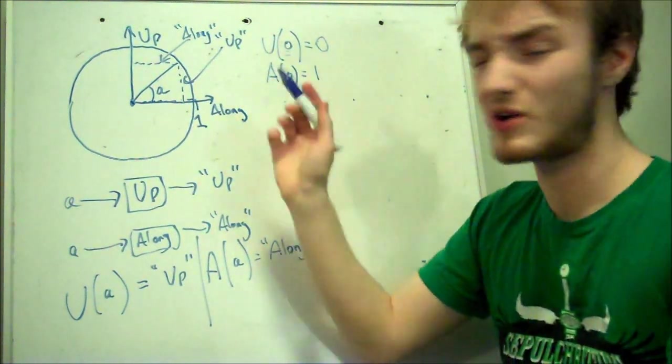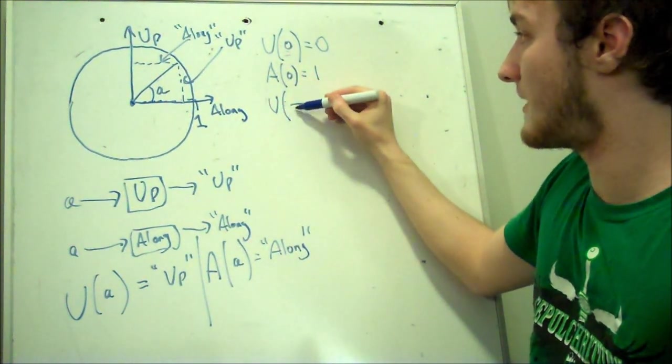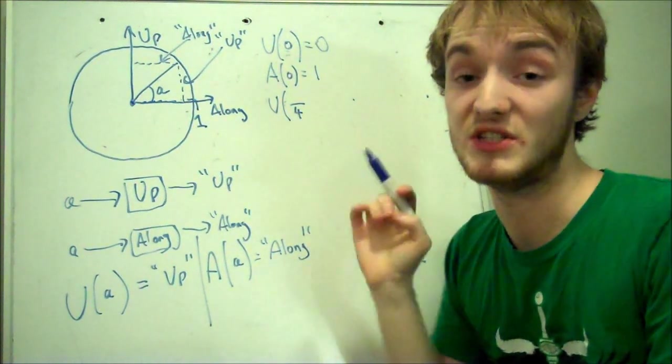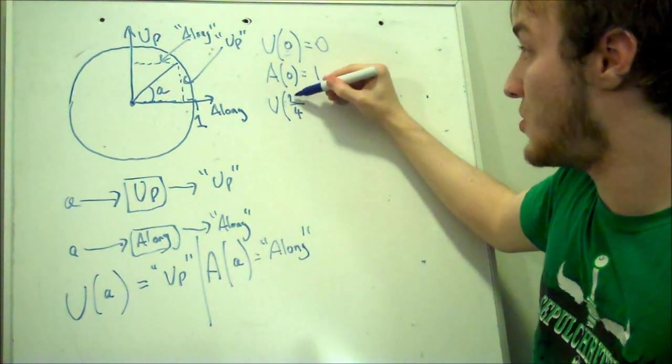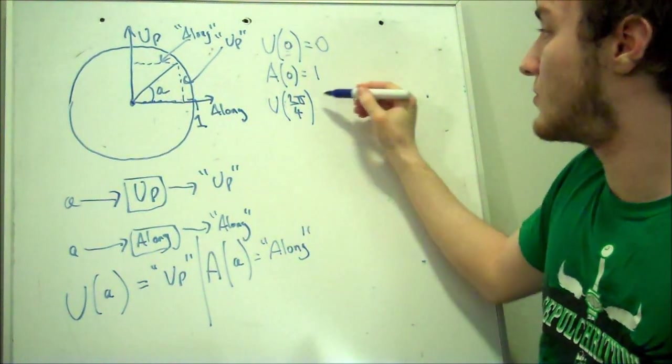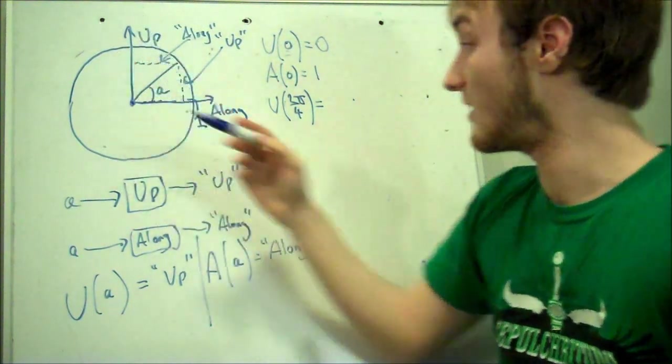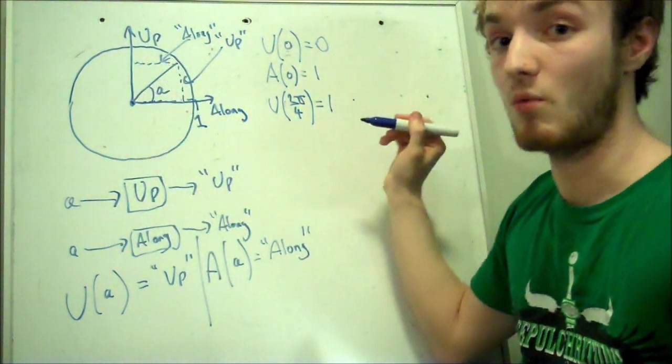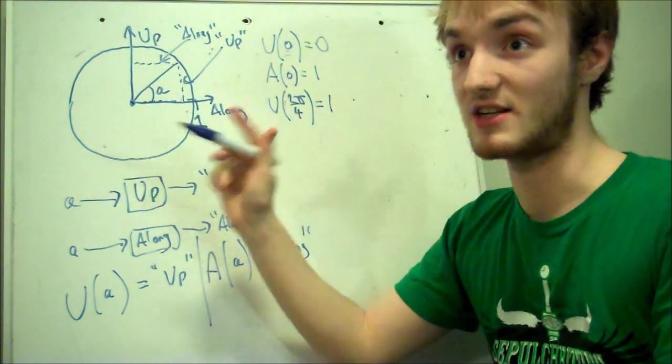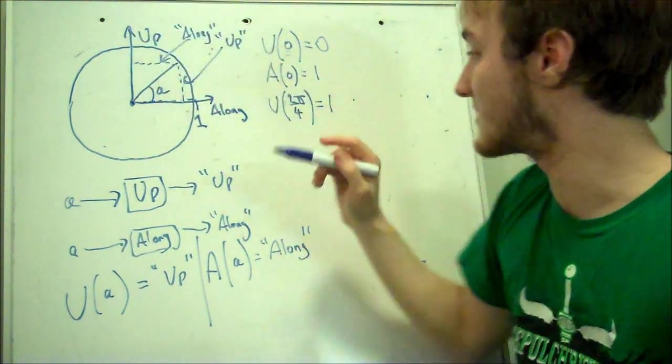Another one to think about is, what if we're a quarter of the way around? So we say up machine for a quarter of the way around. Now remember we're using radians, so there's two pi radians in a circle. For a quarter of the way around, the up machine is going to give us one. It's going to be going straight up. It's going to be one length away from this centre.